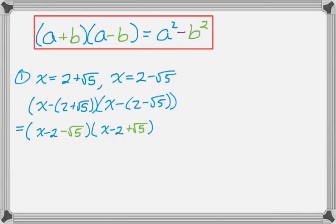So what I'm doing is I'm treating x - 2 as a and then √5 as b. And so what that means is that to multiply these I actually just end up with a², so (x - 2)², and then minus b², so (√5)².